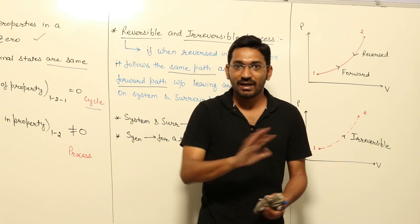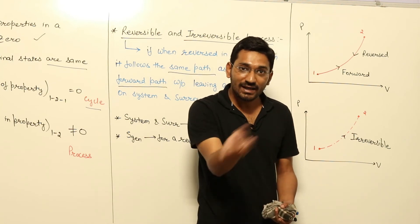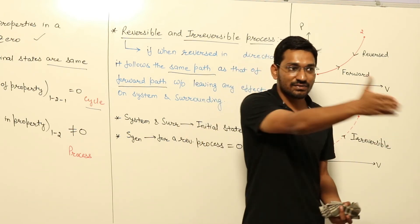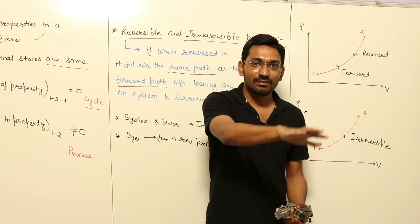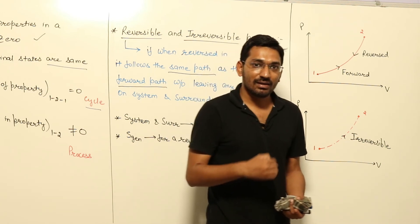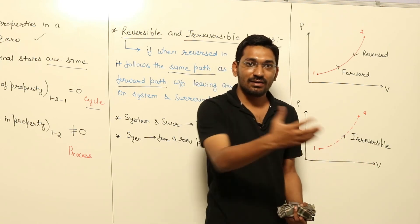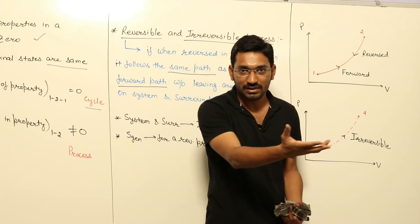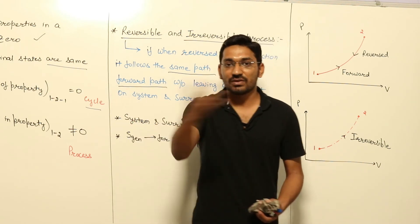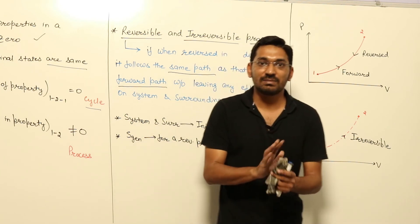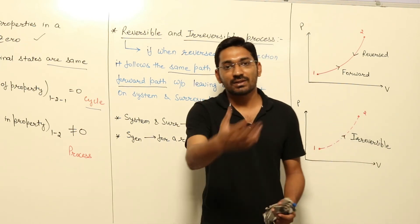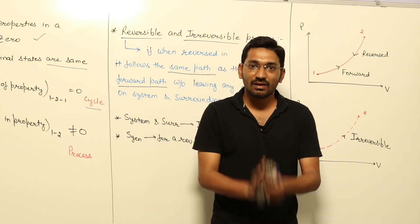Since the surrounding is not at its initial state, this process is irreversible. To make it reversible, Suresh would have to give the 10 rupees back to Mohan, restoring the surrounding to its initial state. Alternatively, if I take 10 from Mohan and give it back to Mohan directly, both system and surrounding are at their initial states — that is a reversible process. In a reversible process, both system and surrounding must return to their initial positions.